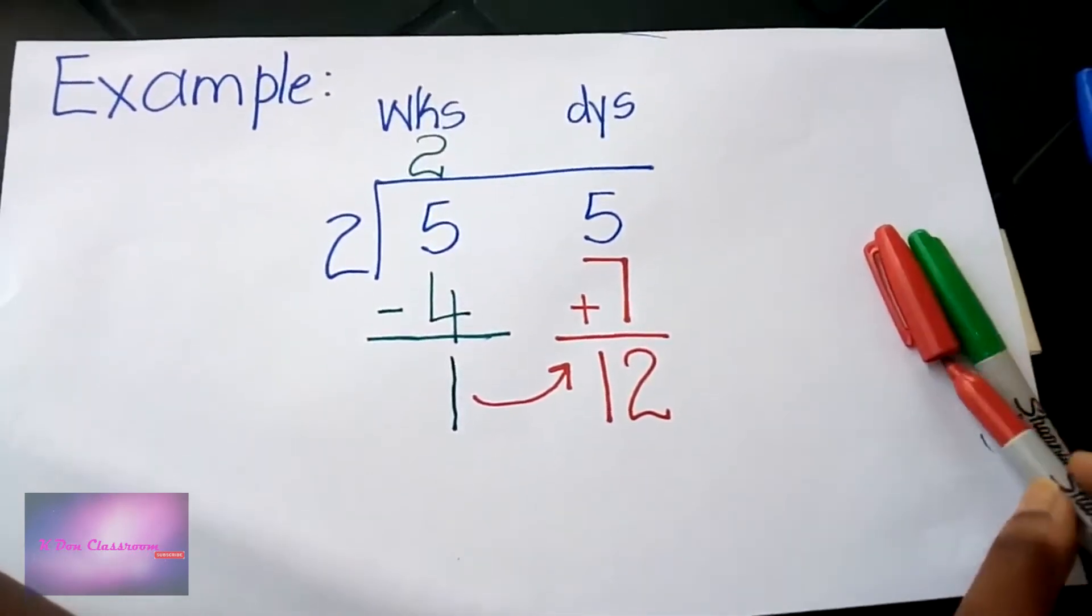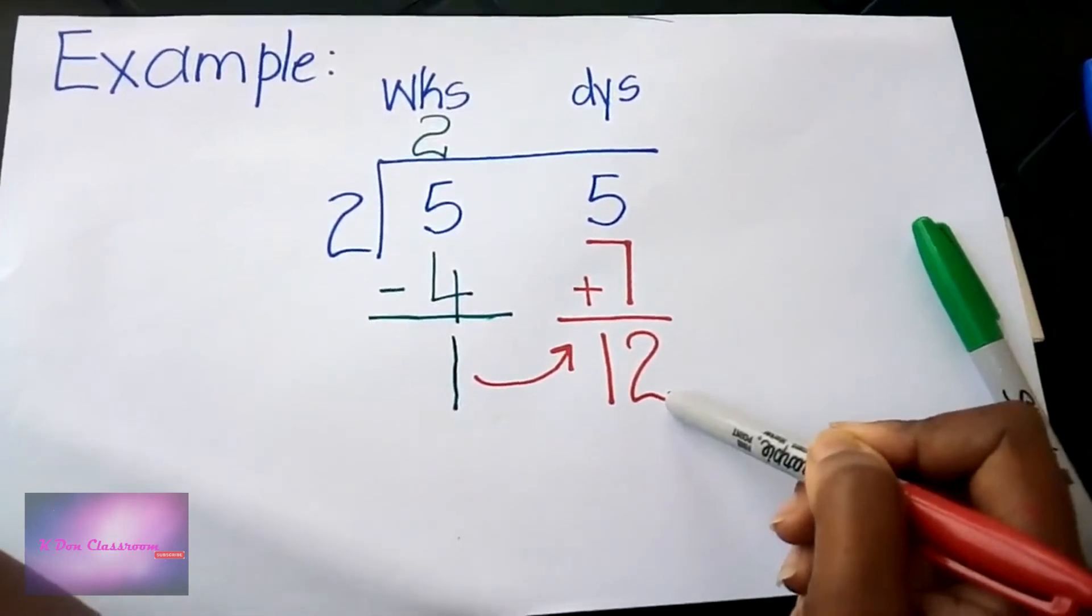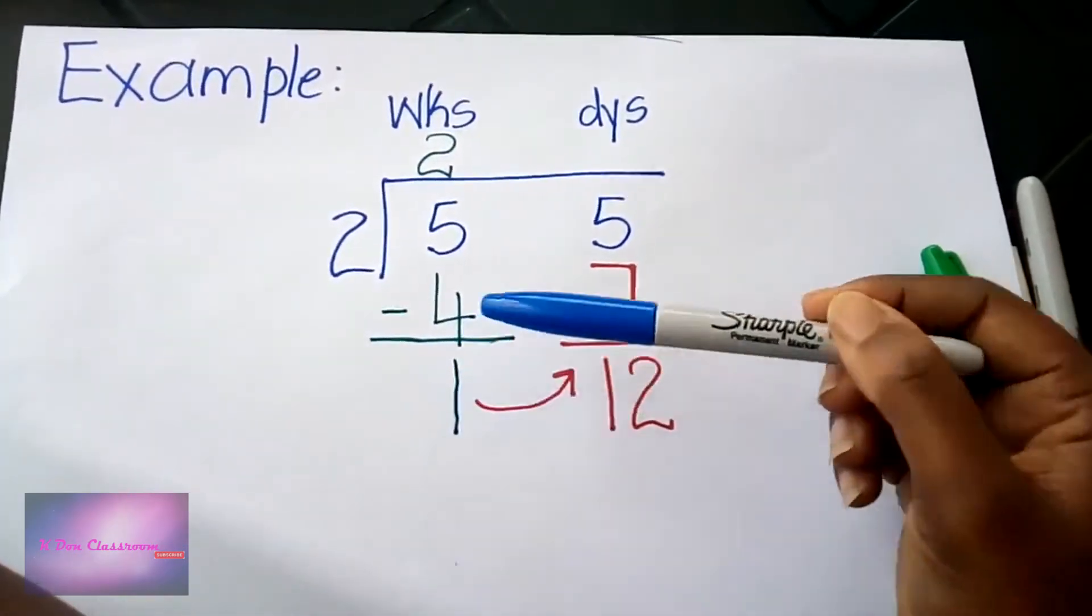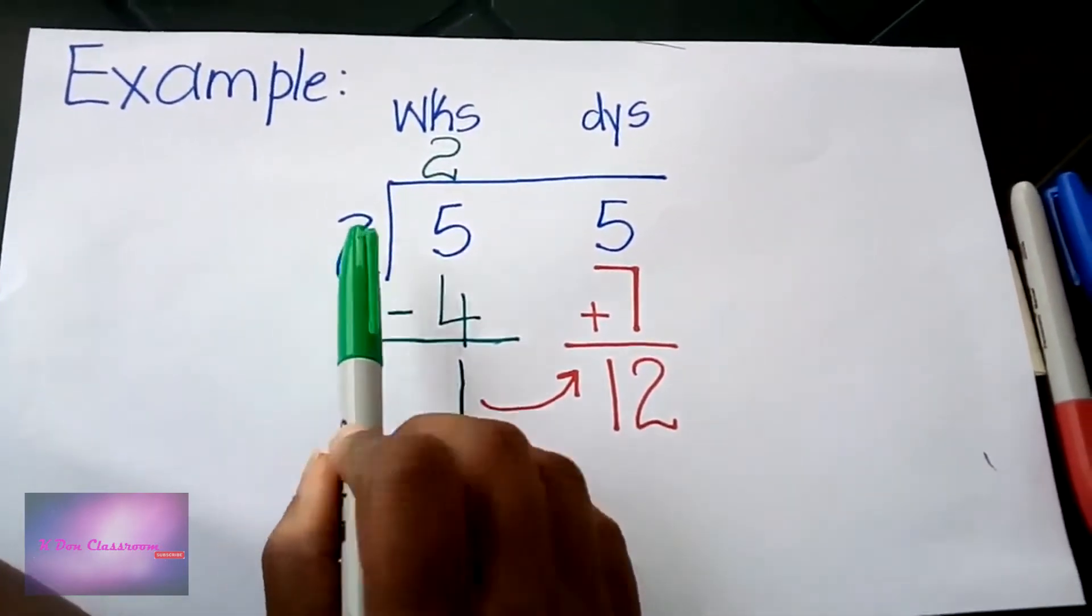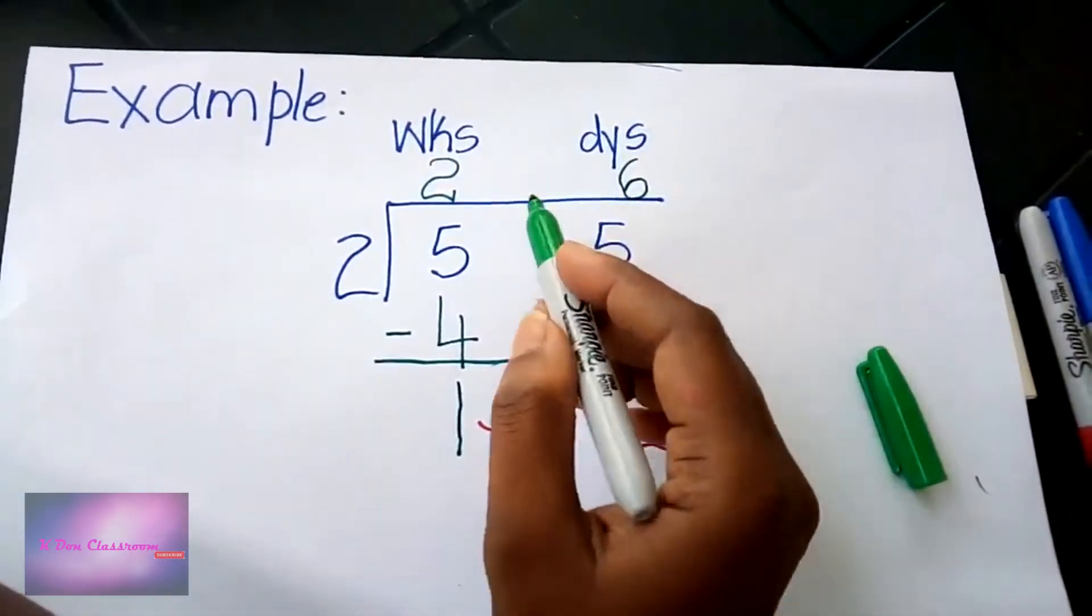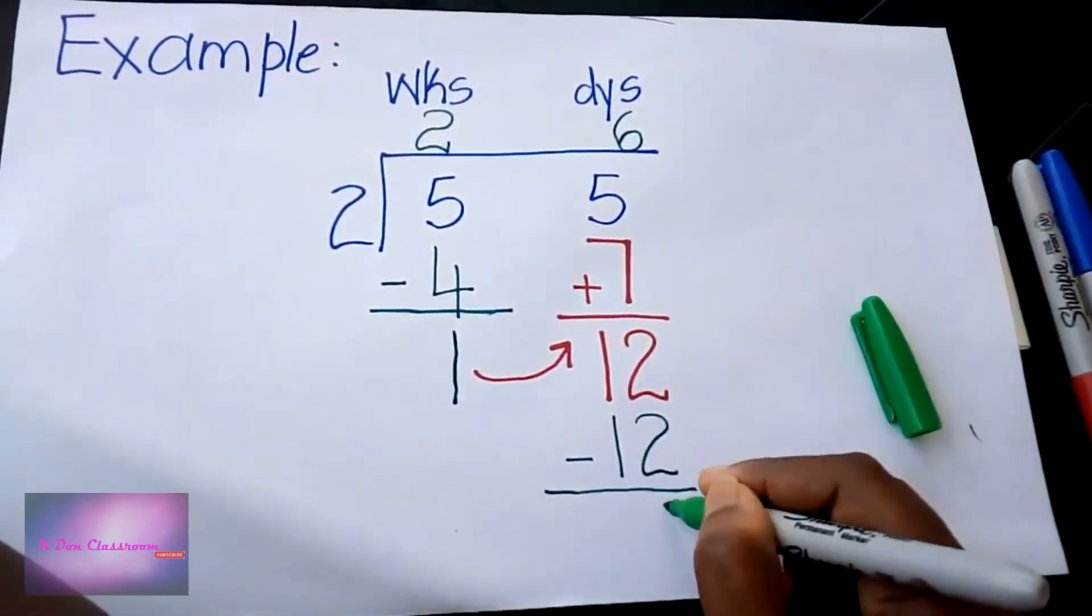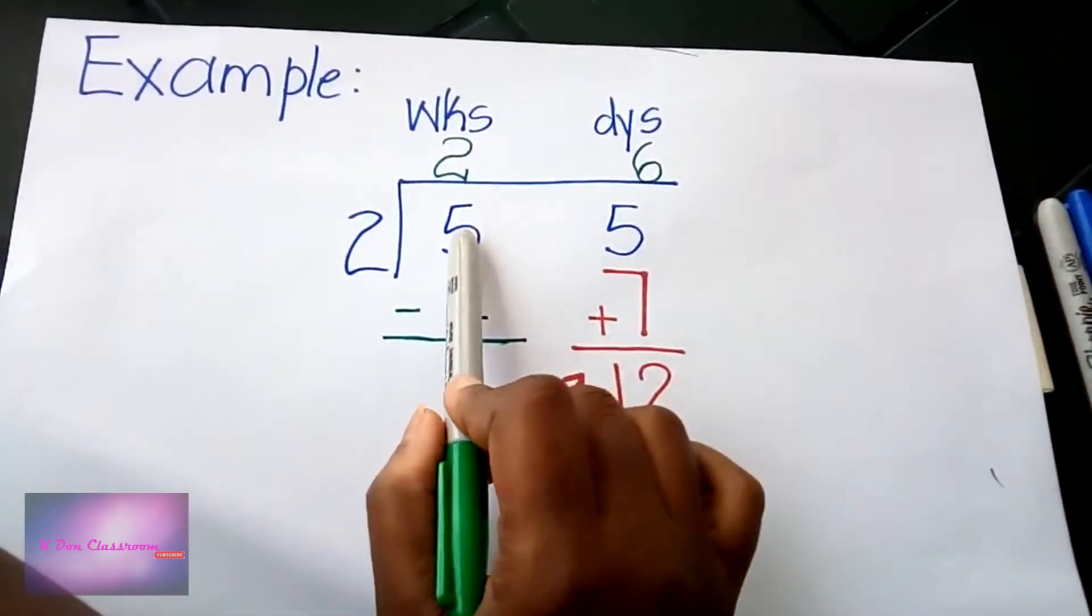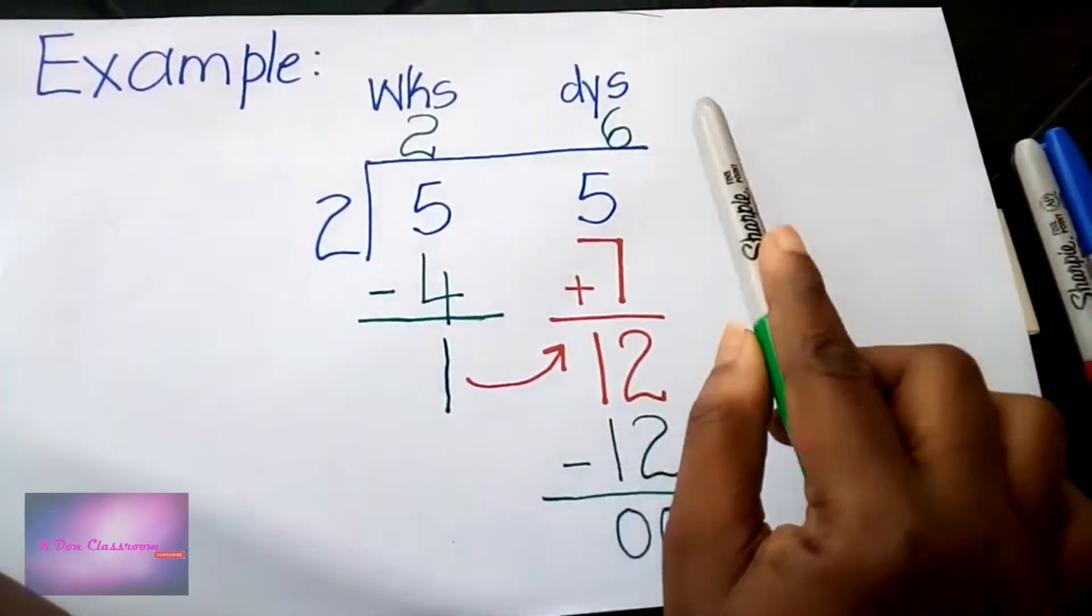Five days and seven days, I'm going to add them. When I add five with seven I will get twelve. So I now have 12 days. Five days plus seven days gives us 12 days. Now I can divide my days. I have 12 days divided by two. Two into twelve will give us six. Six times two is twelve. When I take away 12 from 12, I end up with nothing. So five weeks and five days divided by two will give us two weeks and six days.